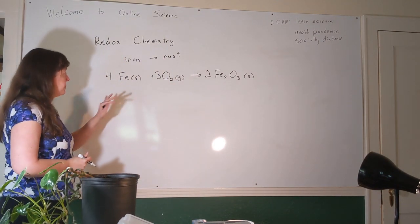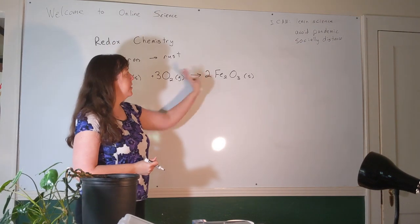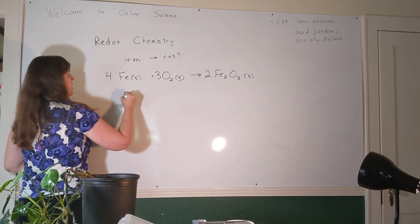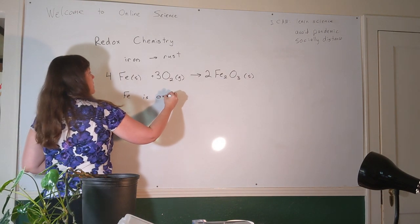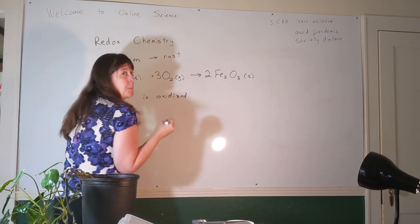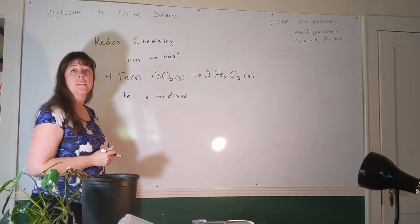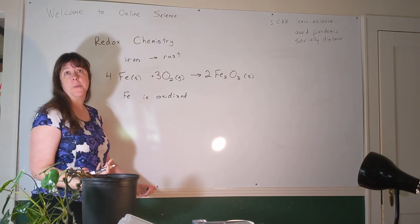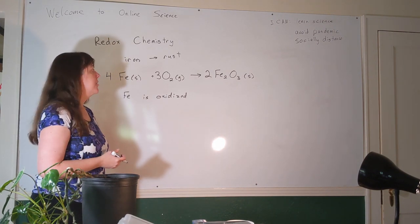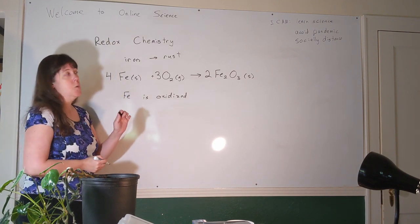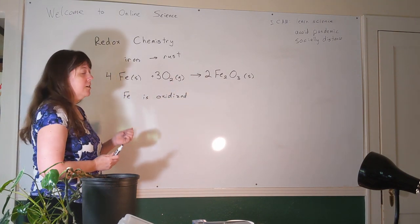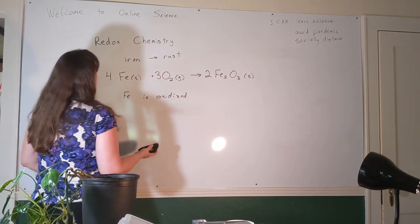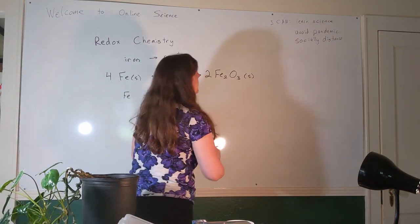When we look at this process, the iron starts out as an element by itself on the left, and on the right it's bound to oxygen. The iron is oxidized. This is the oldest definition of oxidation, which literally meant the addition of oxygen. But it turns out that oxidation doesn't really have to do with oxygen — it has to do with electrons.